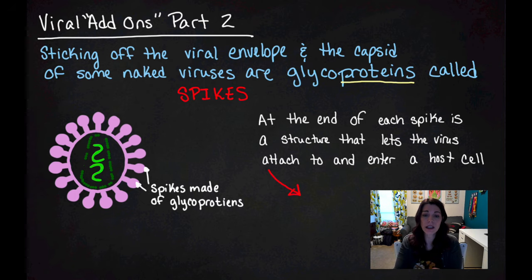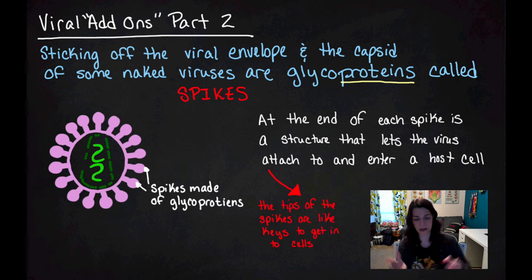It basically is functioning like the tips of the spikes are keys to get inside the cell's doors. They trick the cell into letting them in, and then they hijack the cellular machinery and start producing more virus.